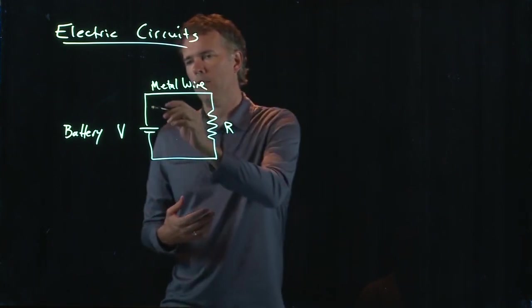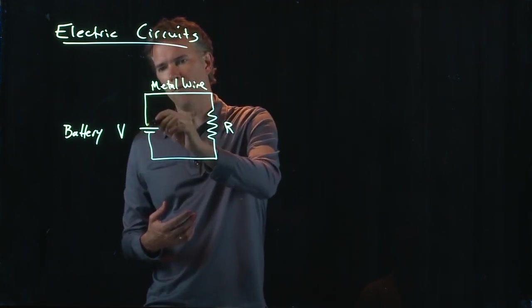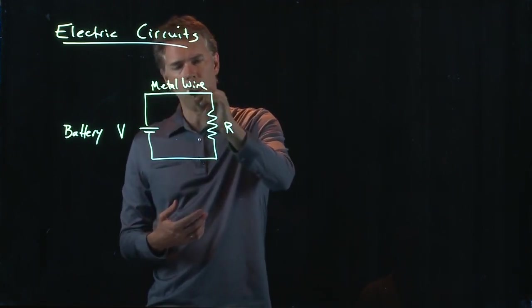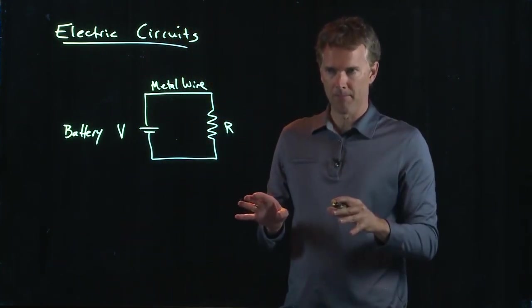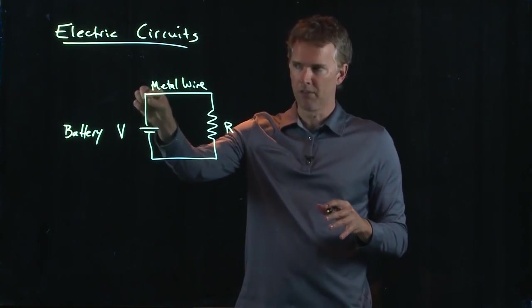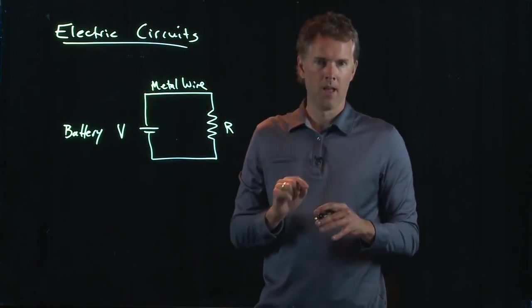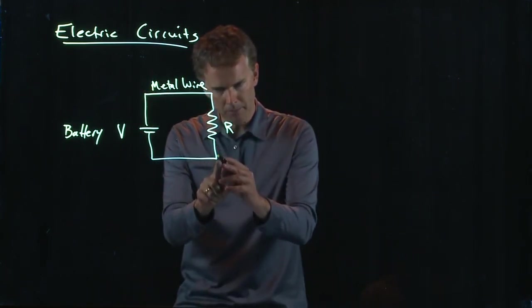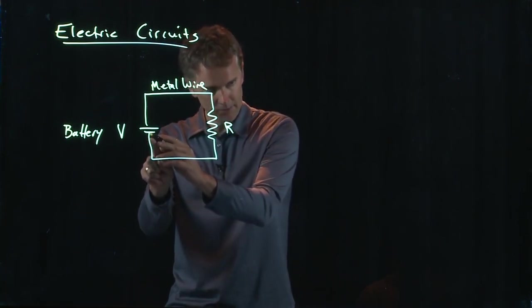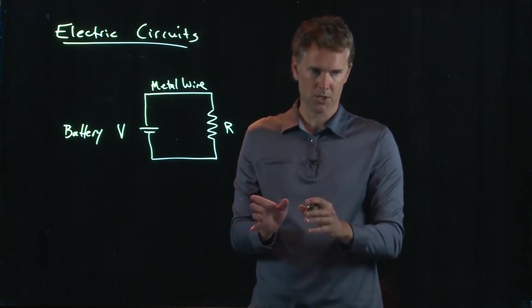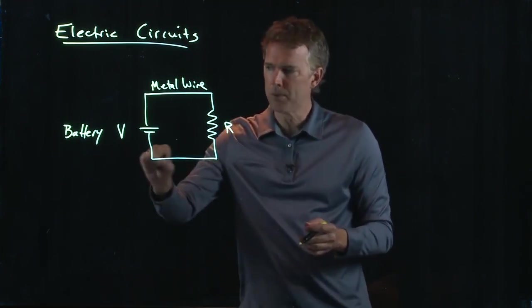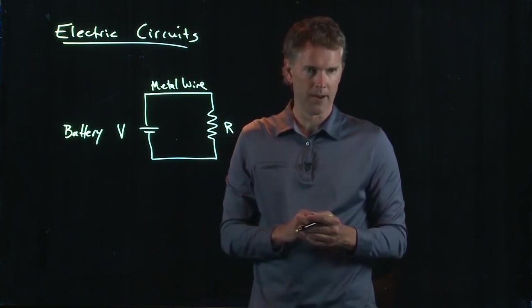So the potential anywhere from this side of the battery, all the way around to this side of the resistor, is exactly the same. That potential is the same along that wire. Likewise, on the bottom side here, from the negative side of the battery all the way to the bottom side of the resistor, that potential is also equipotential. It's constant around there.